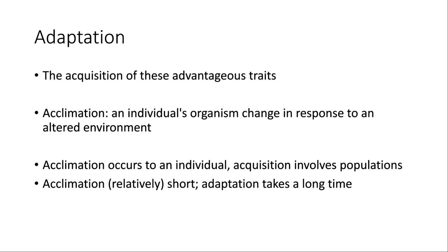That's an example of acclimation: it's looking at an individual, it's a shorter process, and it's not something that can be passed on. If that runner has a child, they're not passing on the acclimation — whereas adaptation involves traits that do get passed on from parent to offspring. That's why it's a slower process requiring multiple generations.